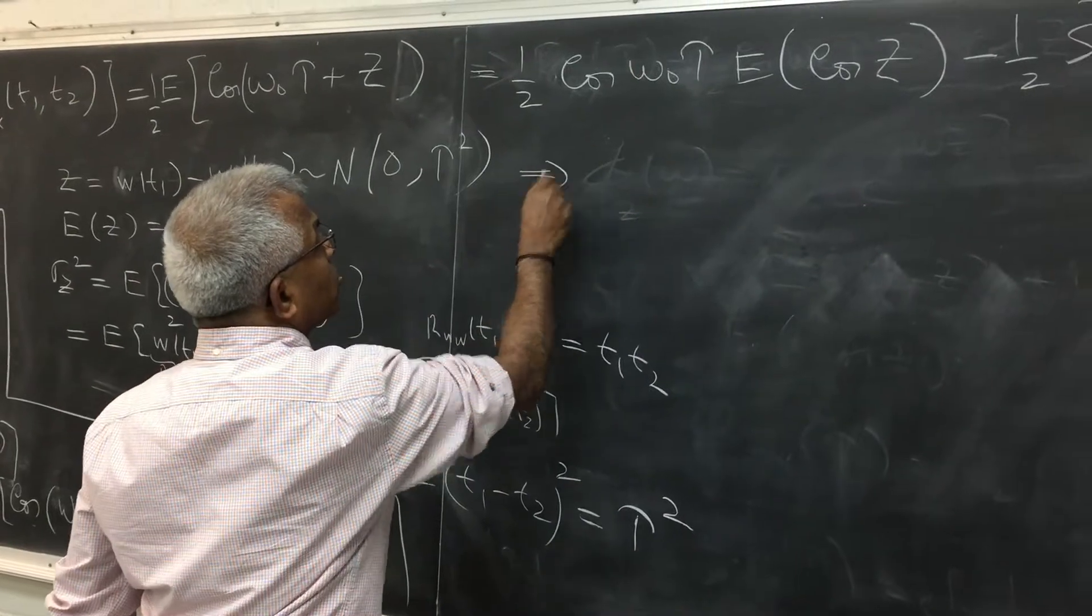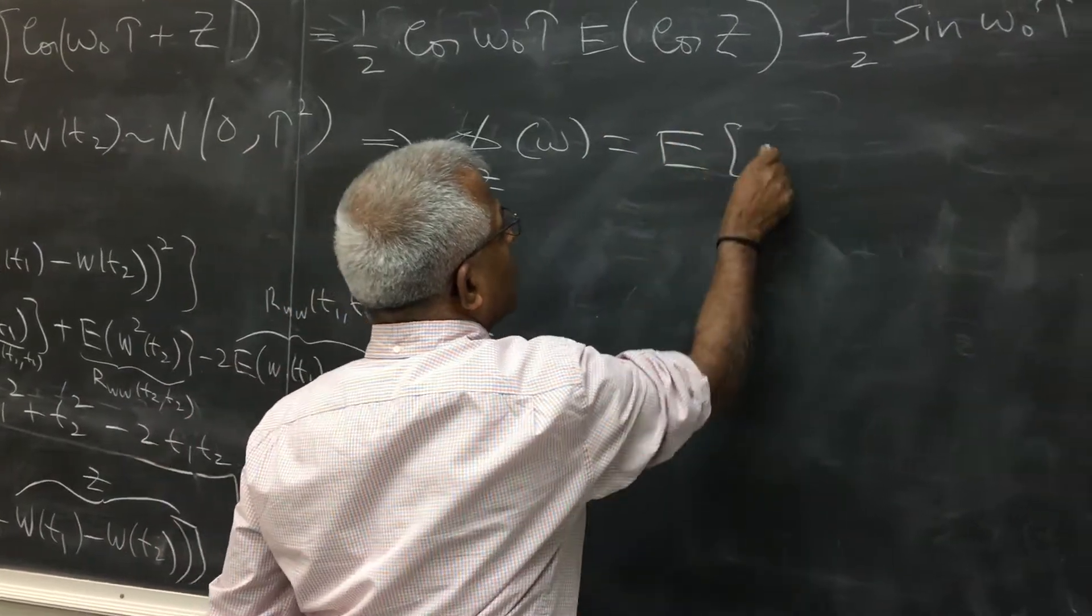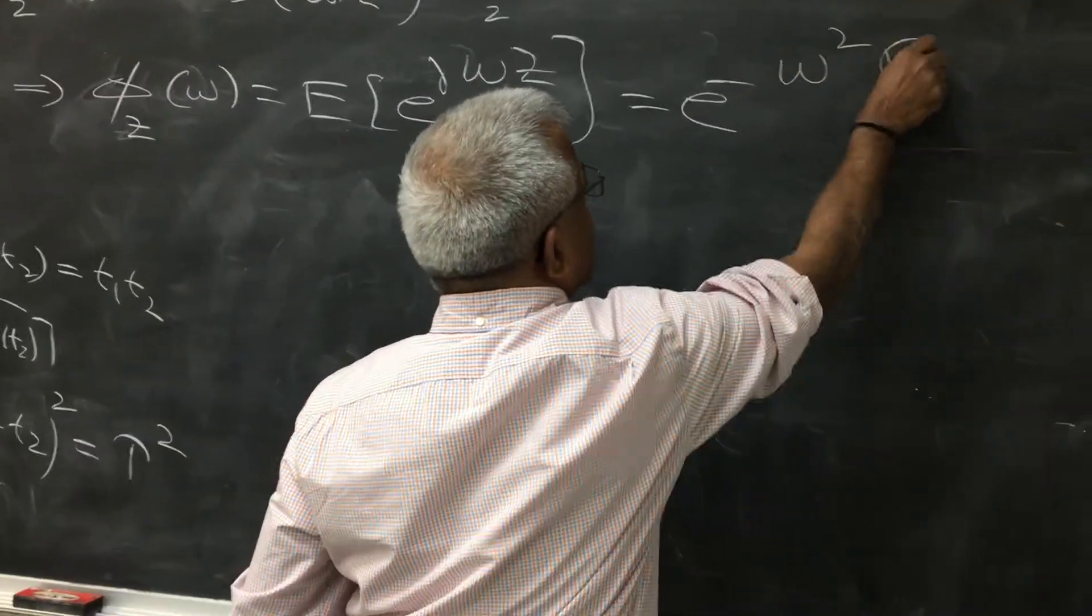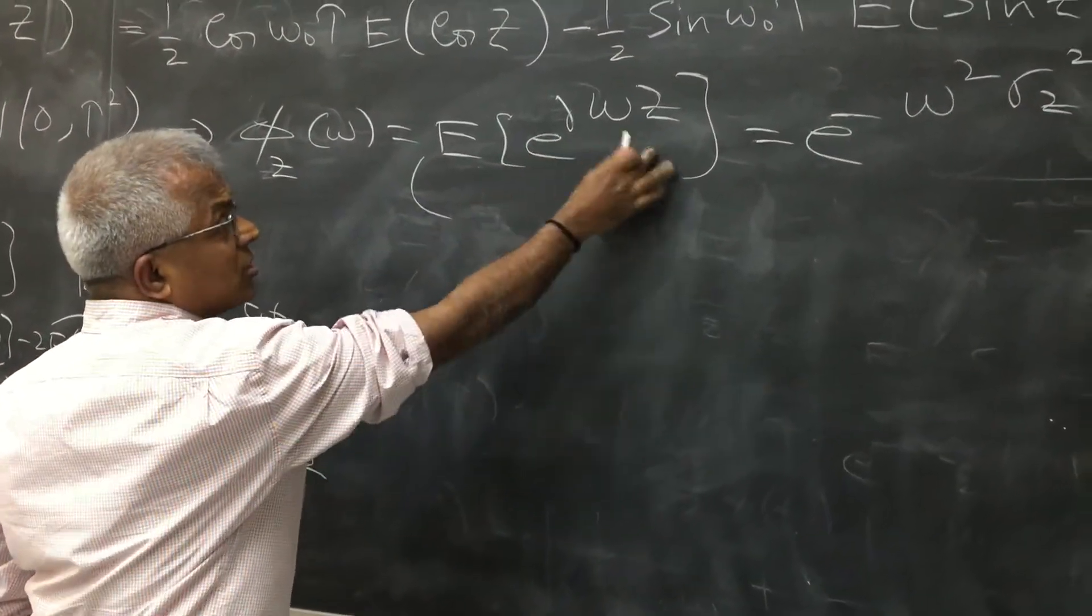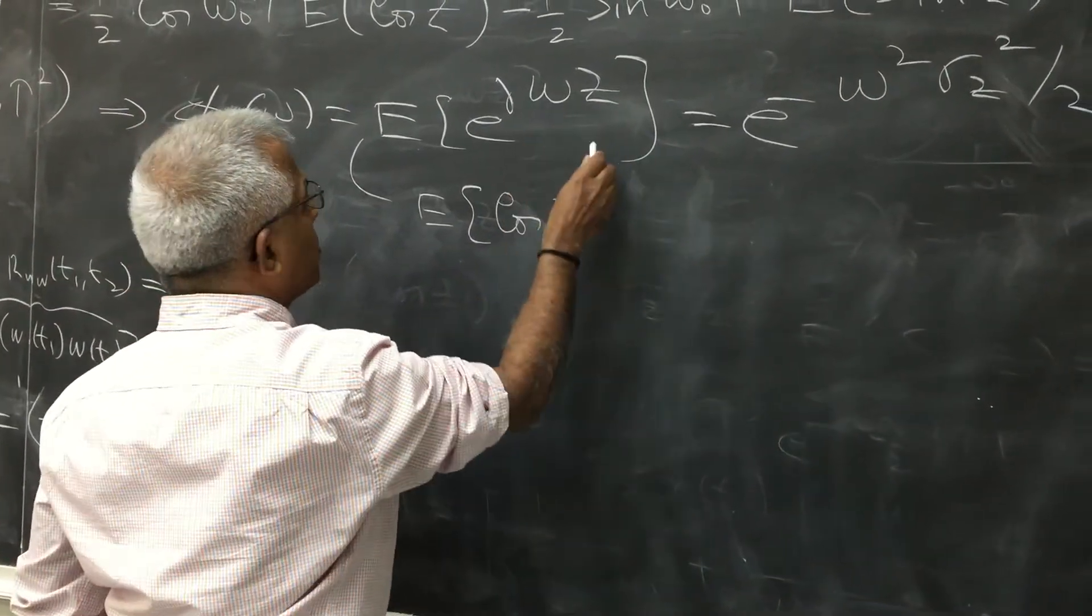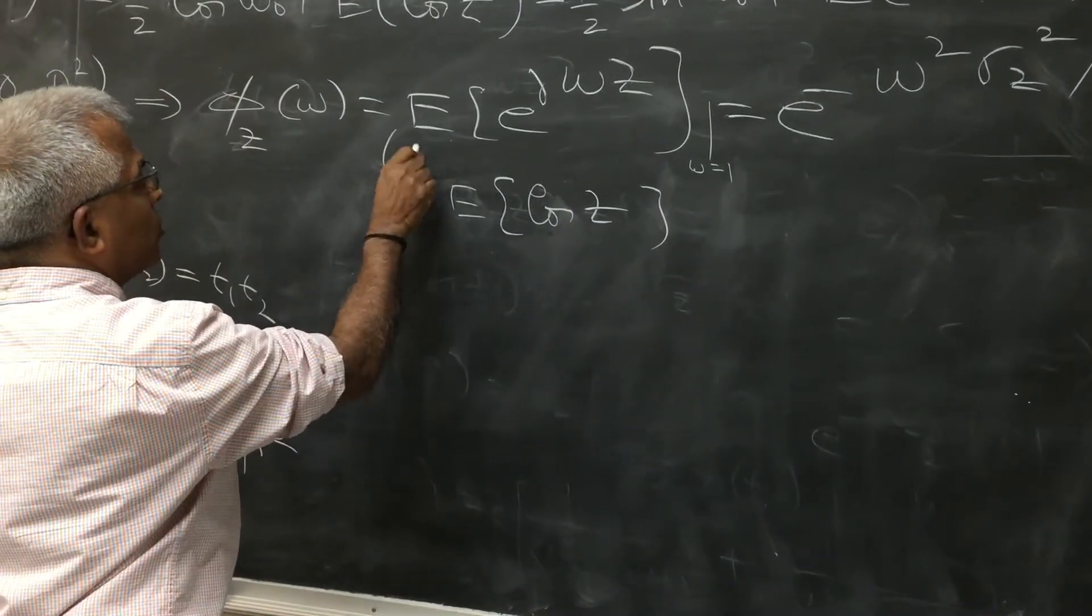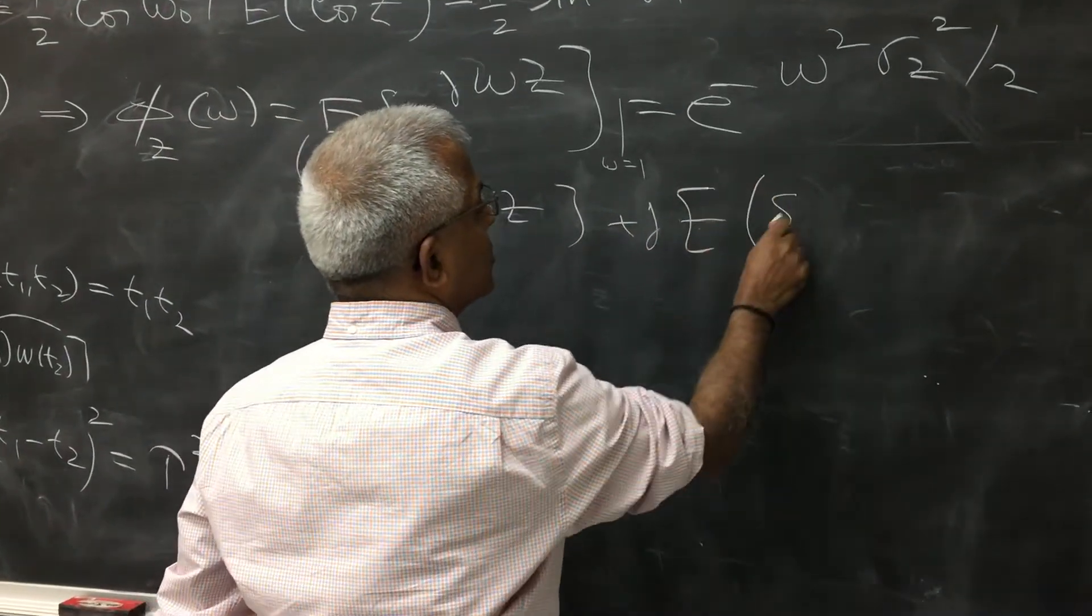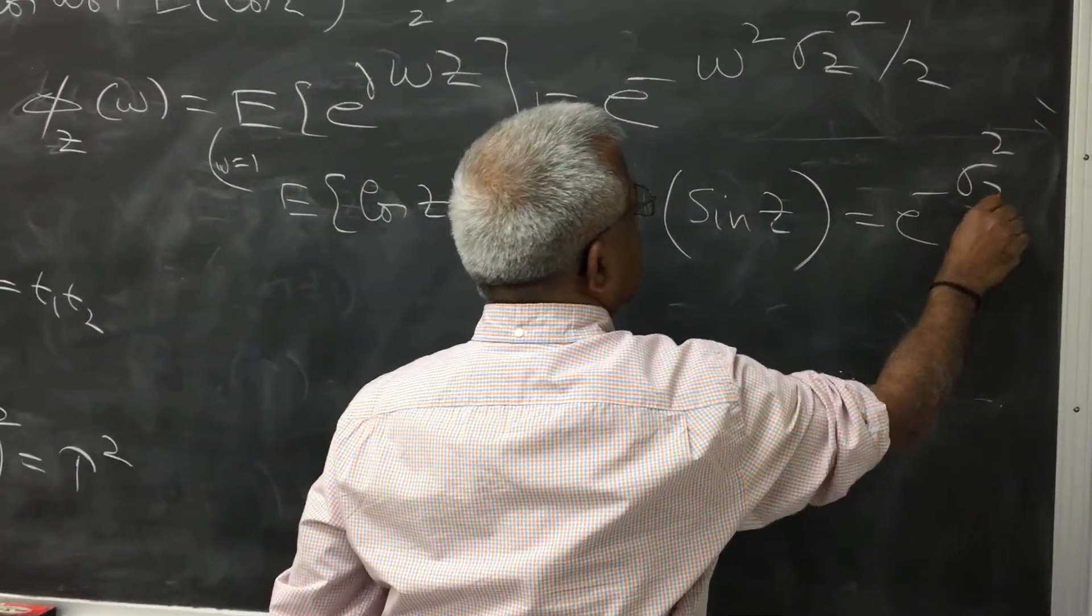Now to compute this cosine expression, let's look at the characteristic function of z. That's expected value of e raised to j omega z. But this is e raised to minus omega squared sigma z squared by 2, standard expression. But this you can expand as cosine plus sine. So this is actually expected value of cos, and let me compute this for omega equal to 1. If you put omega equal to 1 you get this plus j expected value of sine z. And put omega equal to 1 on the right side, you get e to the minus sigma z squared by 2.